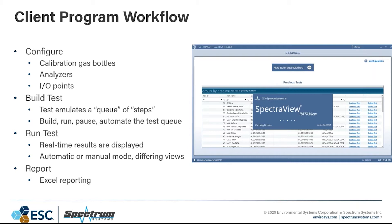You basically build the entire queue or test and then can start executing it at any time. You can see it go down easily — where it is in the test, what it's done so far, what's next. For the actual running of the test, all the real-time results are displayed on the screen. There is an automatic or manual mode, and different views — a one-minute run view versus a regular test in progress view — to help distinguish where you are in the test.